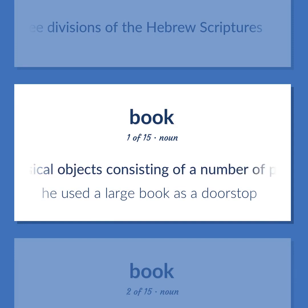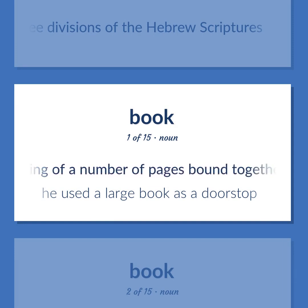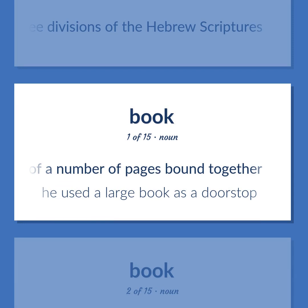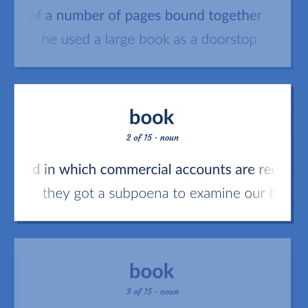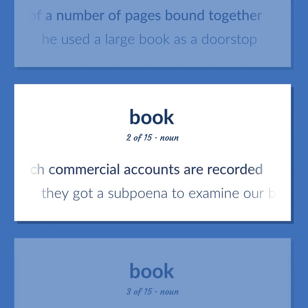Physical objects consisting of a number of pages bound together. He used a large book as a doorstop. A record in which commercial accounts are recorded. They got a subpoena to examine our books.